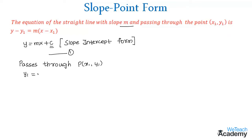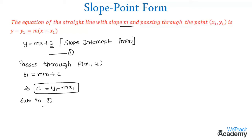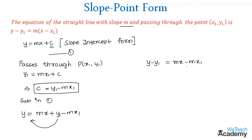So let us write y1 equal to mx1 plus c. From this equation we get the value of c as y1 minus mx1. By substituting this value in equation 1 we get y equal to mx plus y1 minus mx1. Then by transferring y1 to the left hand side we get y minus y1 is equal to mx minus mx1, and taking m as the common factor, we get y minus y1 is equal to m into x minus x1.